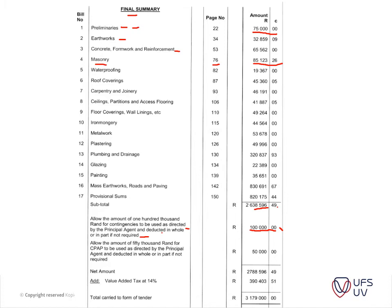You also allow an amount — say 50,000 rand — for contract price adjustment, which is basically inflation, calculated using certain indices. On projects running over a couple of years this amount is very important. You get your net amount measured, add VAT, and get your final tendered amount, which is carried to the tender form. If successful, this is signed and becomes the contract amount the contractor is bound to — it becomes a quote to the client.